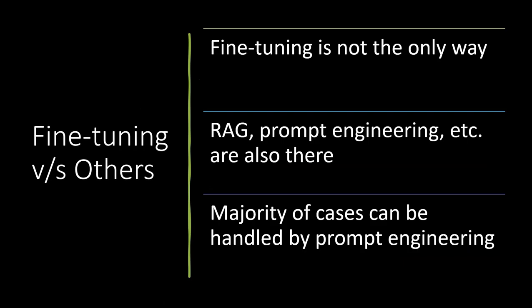Let's move on to fine-tuning versus other methods. Many people get confused here. Understand that fine-tuning is not the only way to customize or change the behavior of your model — it's just one way. Basically there are two ways to deal with data: one is adding all required information to the prompt, and the other is changing the behavior of the model itself. RAG, prompt engineering, and similar approaches are alternatives to fine-tuning, and the majority of cases can be handled with prompt engineering itself.